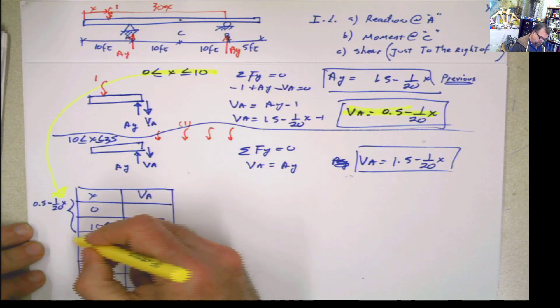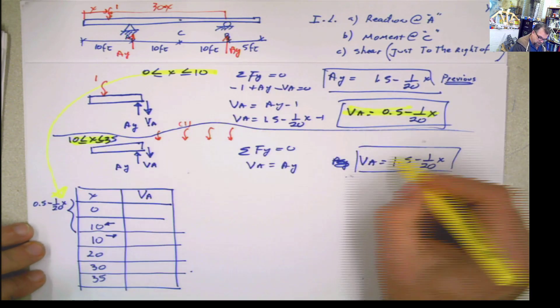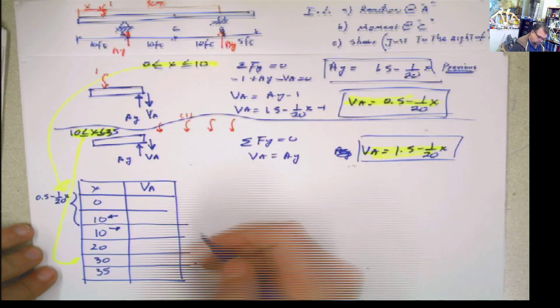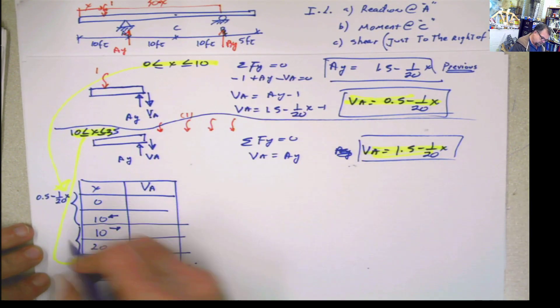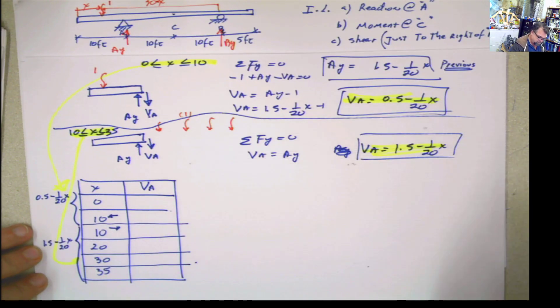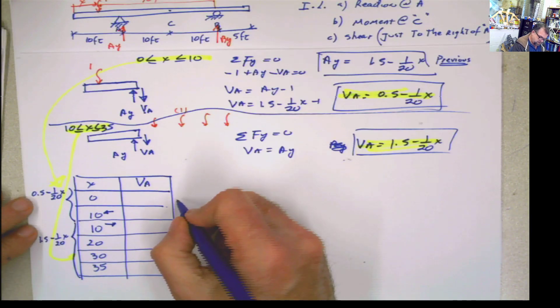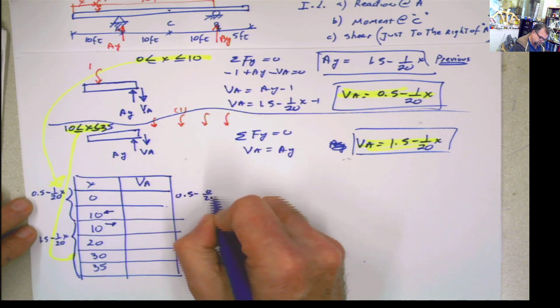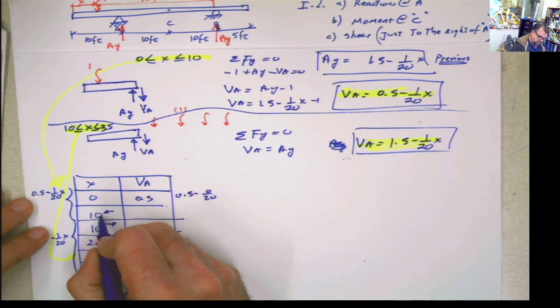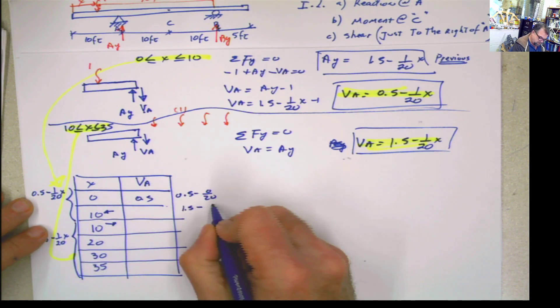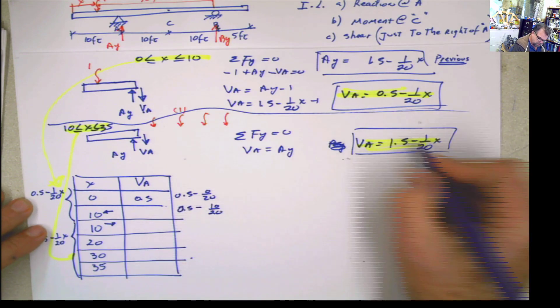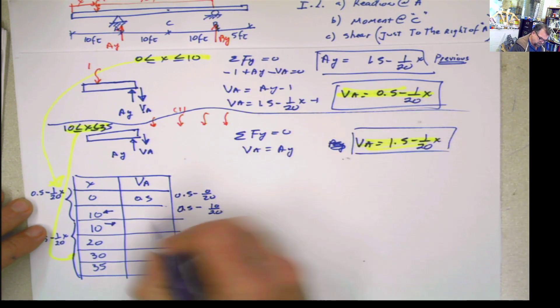Now, for the other part between 10 and 35, this is the equation and this is what we're going to do here. The equation there is 1.5 minus 1 over 20x. The rest, plug and chug. For x equals 0, this part, 0.5 minus 0 over 20, equals 0.5. When x equals 10, 1.5 minus 10 over 20. Well, I'm reading. This one, 0.5. You see I was switching using this one. 0.5 minus 0.5 equals 0.